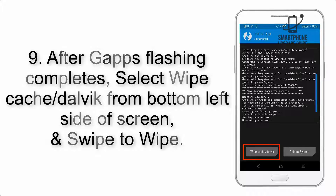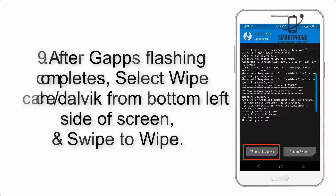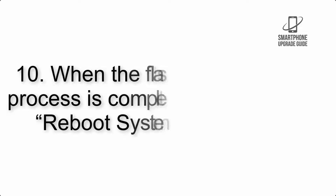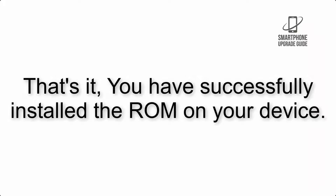Step 8: Flash the GApps zip package in the same manner. Step 9: After GApps flashing completes, select Wipe Cache and Dalvik from the bottom left side of the screen and swipe to wipe. Step 10: When the flashing process is complete, hit Reboot System. That's it — you have successfully installed the ROM on your device.